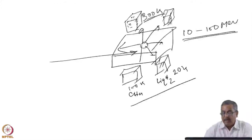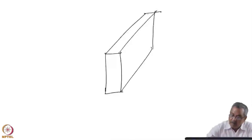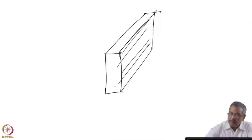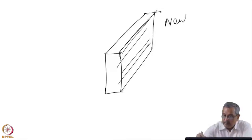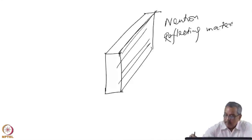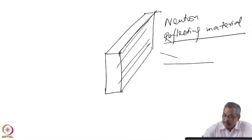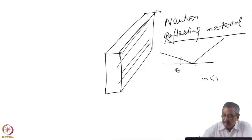A neutron guide is a rectangular assembly where the walls are made of a good neutron reflecting material. Reflection here means optical reflection following Snell's law — a neutron impinges on a surface and reflects. Because n is less than 1, up to a certain angle the neutron gets totally externally reflected. The typical neutron guide is made of nickel.